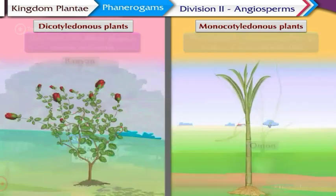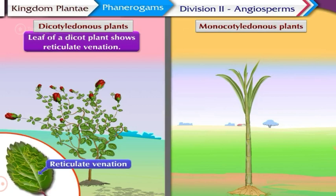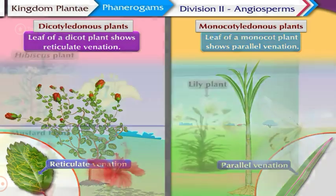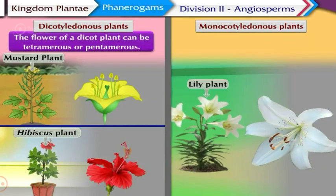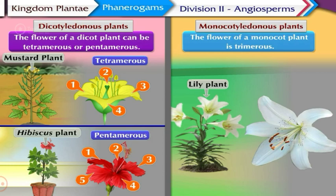The leaf of a dicot plant shows reticulate venation, whereas the leaf of a monocot plant shows parallel venation. The flower of a dicot plant can be tetramerous or pentamerous, that is, with four or five parts or in their multiples, while the flower of a monocot plant is trimerous, that is, with three parts or in multiples of three.